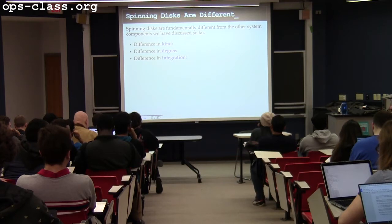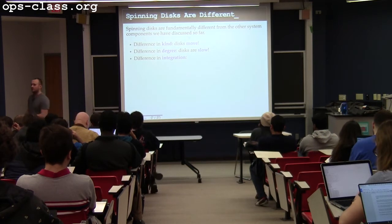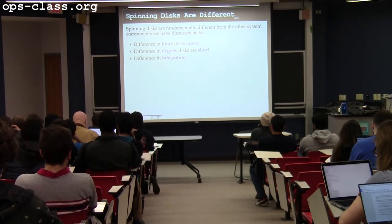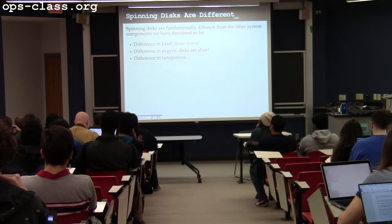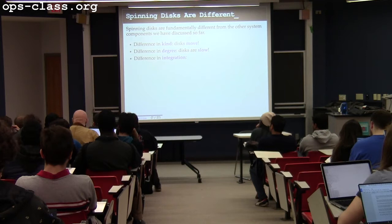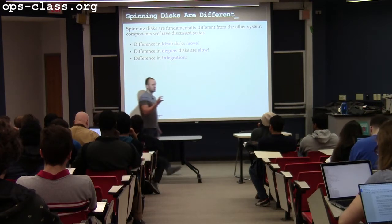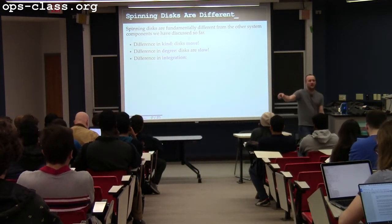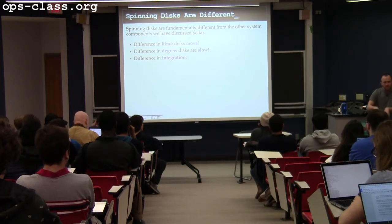Disks are really different than everything else we've talked about — they're physical devices, so they move. They have a physical component that creates a great deal of latency. All the delays in other parts of the system are really functions of the distance between data and where it's being processed and the speed of light through copper. If I've got registers on my CPU and want to do computation on memory, the latency is the time to communicate with memory, get the data, and move it to the CPU.